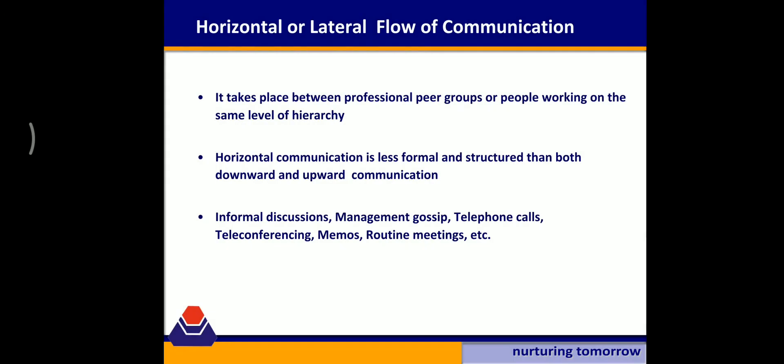Examples of upward flow of communication include business reports, suggestion boxes, and grievance redressal committees. The third and most interesting part is horizontal or lateral flow of communication. In horizontal flow, officers working at the same level of hierarchy communicate with each other. This flow is a bit less formal than upward or downward flow. Since members are working at the same level, they are more interactive, which develops team spirit — it is also known as peer group communication. You can see horizontal flow in routine meetings, teleconferencing, or management discussions. Strong horizontal communication enhances the productivity of any organization.